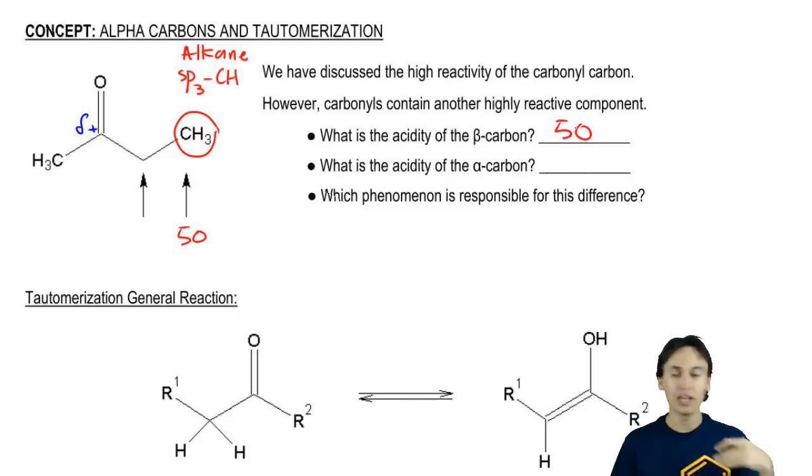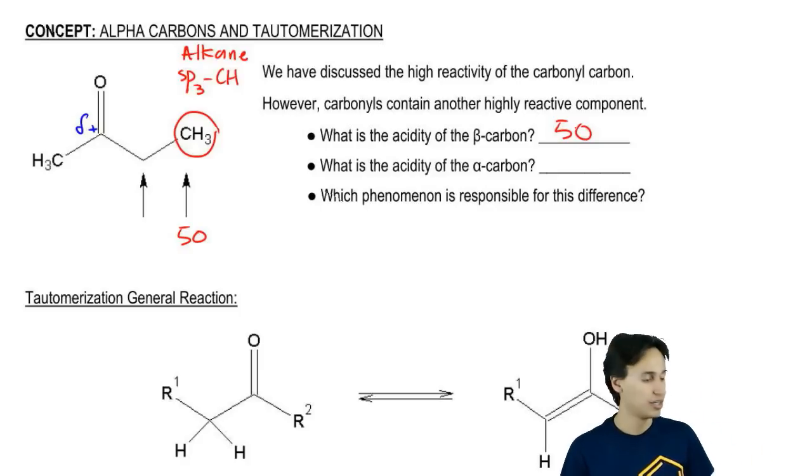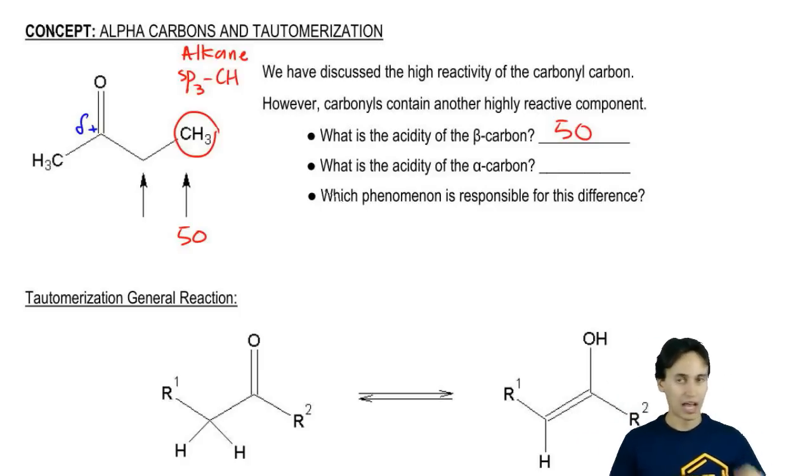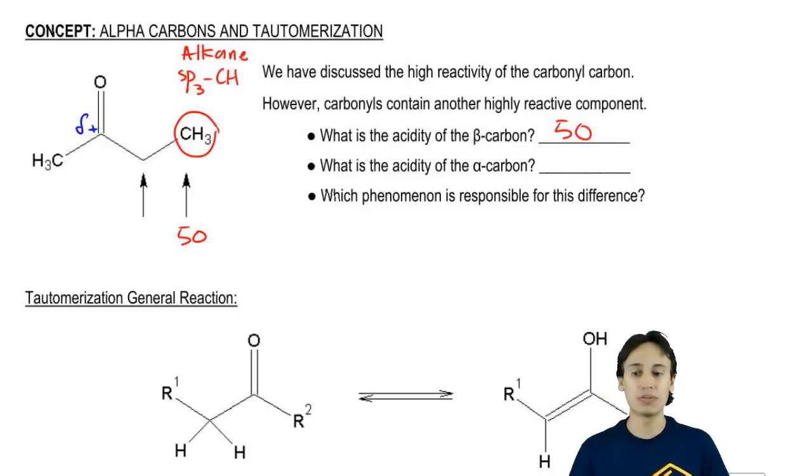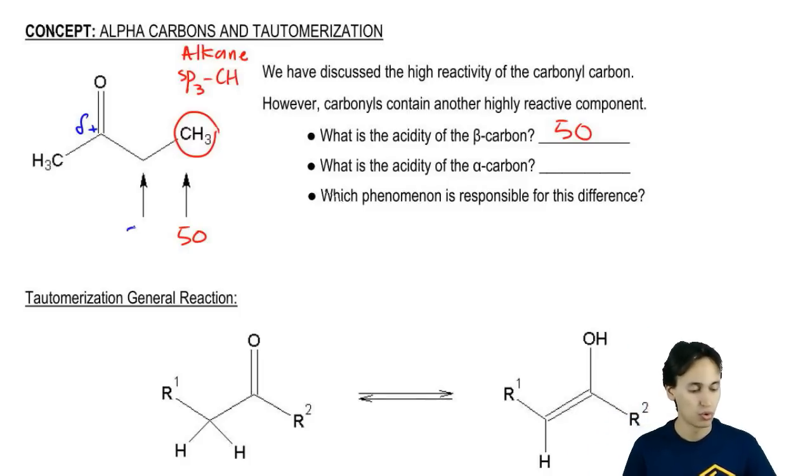The acidity of a normal alkane is 50, but alpha carbons are uniquely acidic. Alpha carbons don't have a pKa of 50. Guess what their pKa is? 20.